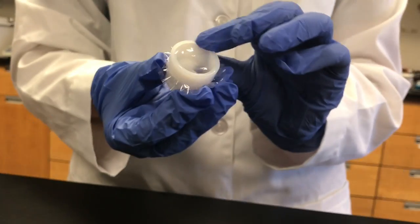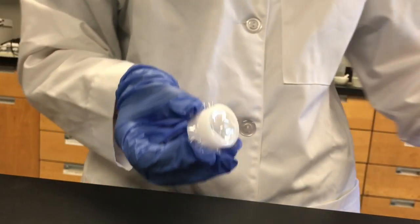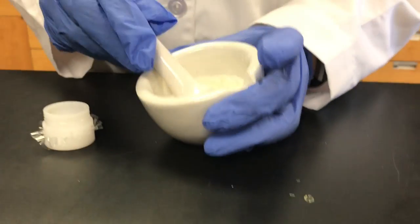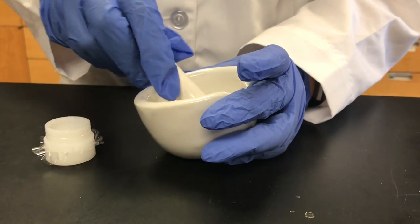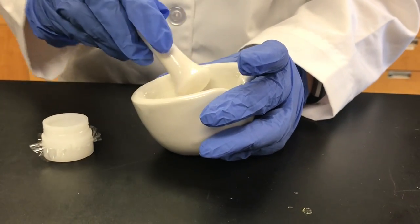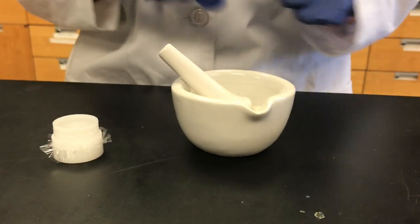Now once you have it ready, it should look like this. It should look better than this, but what you're going to want to do is put all of your sample of the zinc gluconate and the lozenge mixture into here. So we're going to do that now.